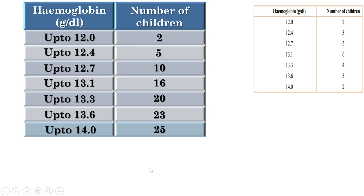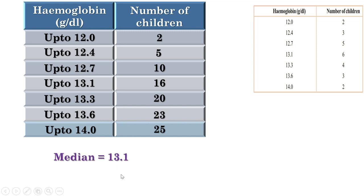The total number of children is 25. Since it is an odd number, there is only one kid at the middle — the 13th kid. Up to 12.7 there are 10 children and up to 13.1 there are 16 children. That means the level of the 11th through 16th children is 13.1, so the level of the 13th kid is also 13.1. Since median is the level of the 13th kid, the median is 13.1.